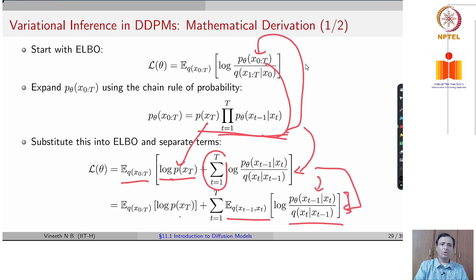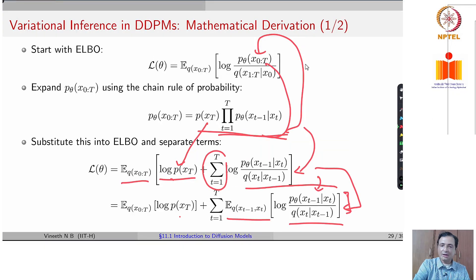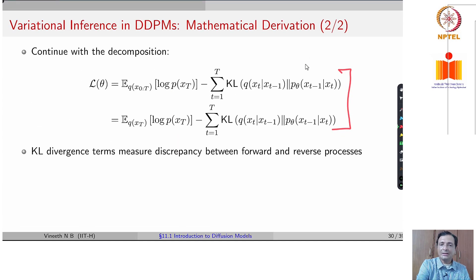This can further be separated by the linearity of expectation. It is not very important to know how this derivation came, but we will do this here for completeness. If you continue this decomposition, the previous term here is nothing but the KL divergence between these two distributions. And hence, you can write the second term here as the KL divergence between q of xt given xt minus 1 with p theta of xt minus 1 given xt.